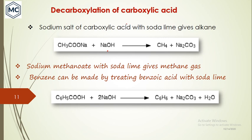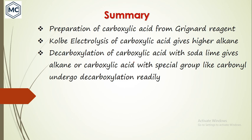Decarboxylation of carboxylic acids also takes place by treating the sodium salt of the carboxylic acid with soda lime. When sodium carboxylate is treated with soda lime it forms the corresponding alkane and sodium carbonate. For example, sodium methanoate with soda lime gives methane; similarly, benzoic acid treated with soda lime gives benzene. In summary, we have learned: preparation of carboxylic acid from Grignard reagent; Kolbe electrolysis of carboxylic acids giving higher alkanes; and decarboxylation of carboxylic acid with soda lime giving alkanes.